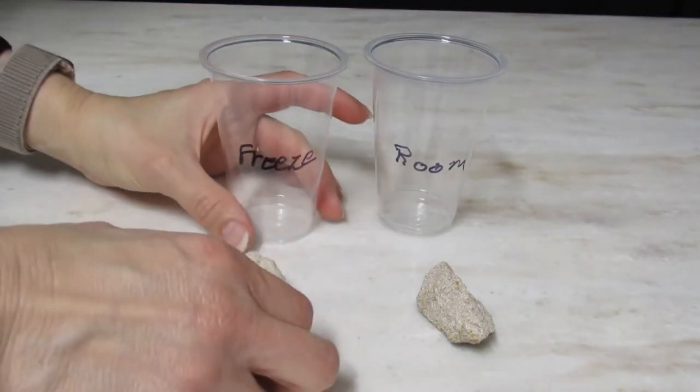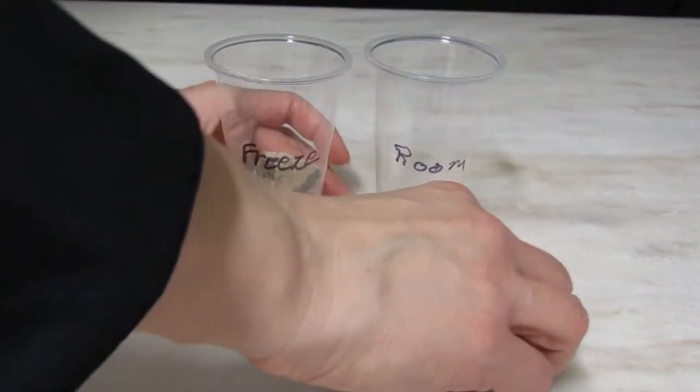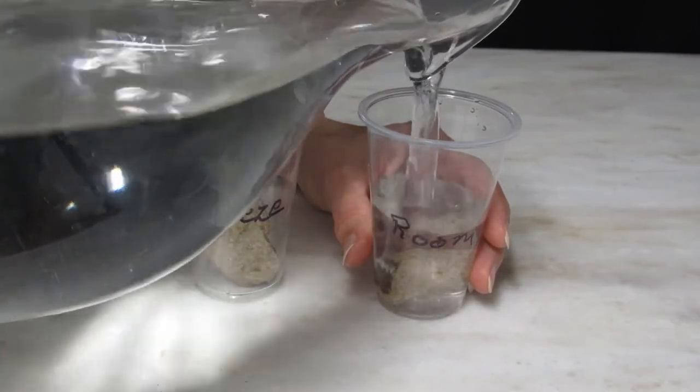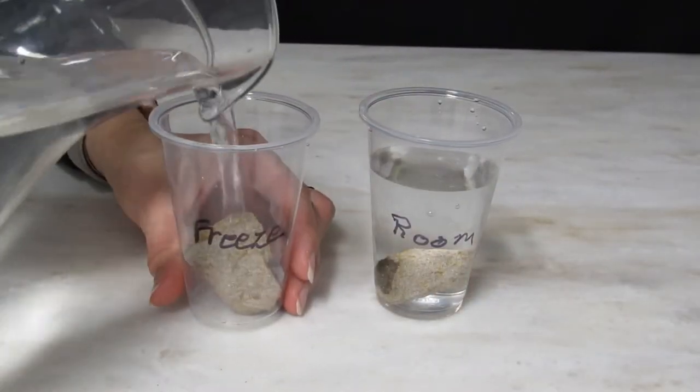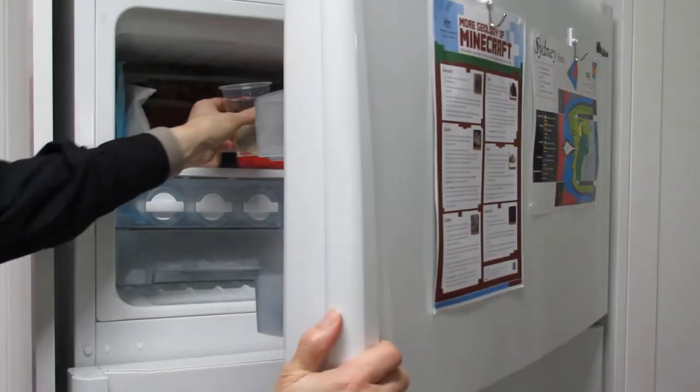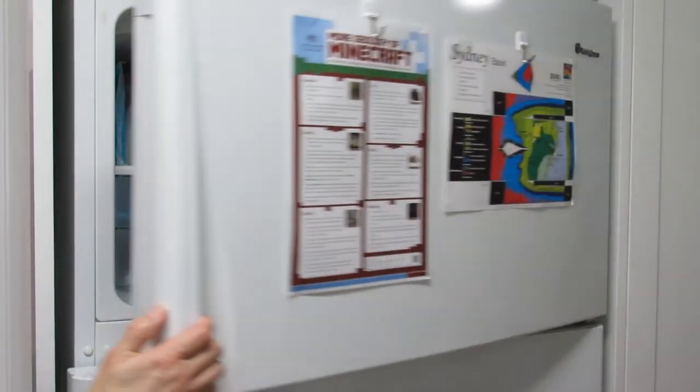Label the cups to indicate which one you will freeze and which will remain at room temperature. Place a piece of sandstone in each cup and then pour water into the cups. Leave one cup at room temperature and put the freeze cup into the freezer overnight.